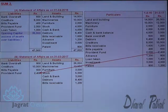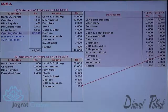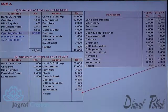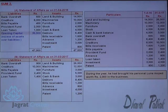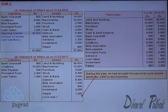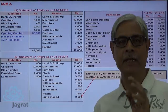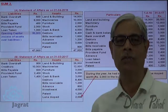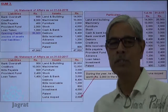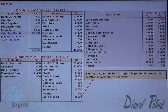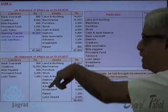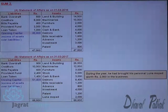Advances on the asset side. Provident fund is a liability towards employees. Loan taken on the liability side. Investment and patents on the asset side. During the year, he brought a personal lunar moped worth 2,000 into the business — this is additional capital and also appears on the asset side. If any asset is brought or purchased during the year and not taken into consideration while preparing the closing value of assets, it should be considered here. Total of assets minus total of liabilities gives the closing capital of 51,400.